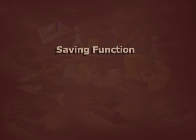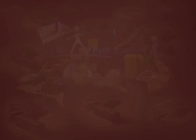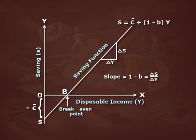Saving function. The saving function is just disposable income minus the consumption function. It is also equal to the amount of induced saving minus autonomous consumption. Thus, S = -A + (1-B)Y. Saving is also a function of income — saving depends upon the level of income and is the excess of income over consumption expenditure. The saving function refers to the functional relationship between saving and national income.